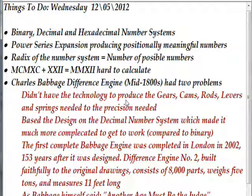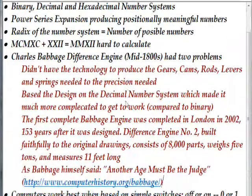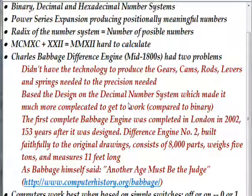A guy that's often attributed as being the father of the computer is Charles Babbage, and he invented a design called the difference engine in the mid-1800s. It had two problems: for one thing, it didn't have the technology to produce the gears, cams, rods, levers, and springs to the precision needed. The other problem was it was based on the decimal number system, which made it really complicated to work, although it's beautiful to watch working. 153 years after he failed to produce this engine in a working model, it was built in London in 2002. It has 8,000 parts, weighs five tons, and measures 11 feet long.